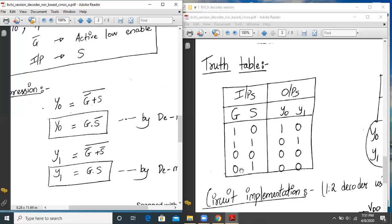Now, if G is 0, irrespective of the value of S, my outputs Y0 and Y1 will be 0. As you can see from this equation.